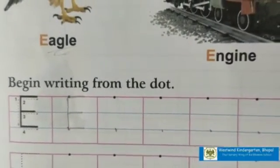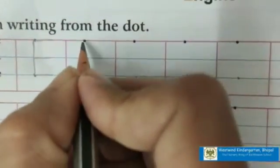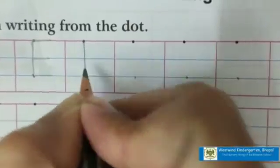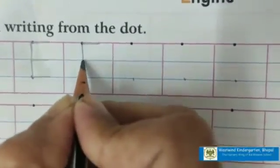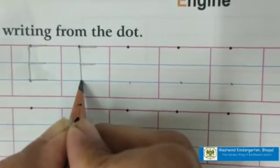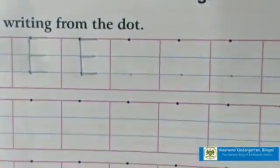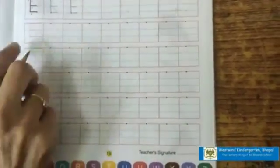The sound of letter E is E. Again, make standing line and make sleeping line on the red line. One more sleeping line on the upper blue line and one more sleeping line on the lower blue line. This is letter E. Now, children, we have to complete the page. Thank you.